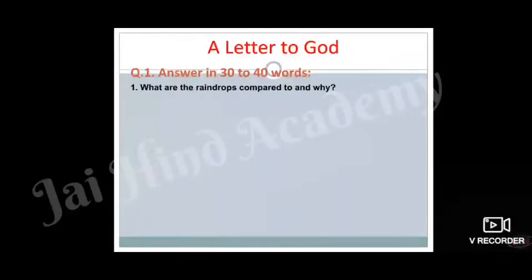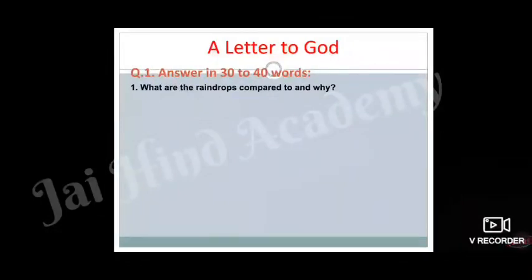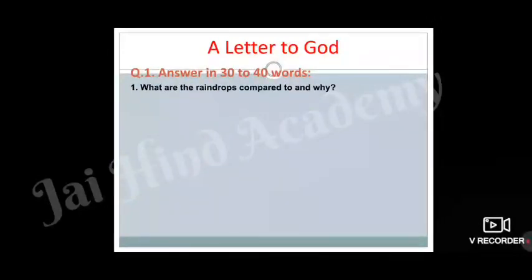In exact words, you can write the answer like this: 'When it started raining, Lencho was very happy. He compares the big drops of rain to 10 cent pieces and little ones to 5 cent pieces. Lencho needs rain for a good harvest. If he has good crops, he will get money. That is why he compares the raindrops to coins.' If you count the words in the answer, you will see it suits the desired word limit. This is how you can write the answer.